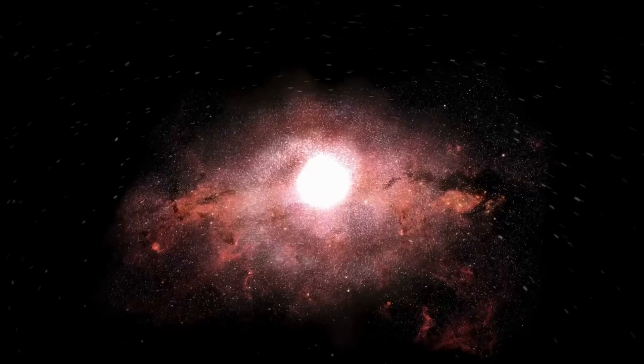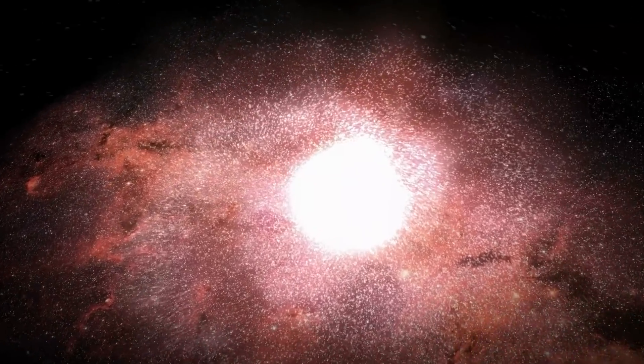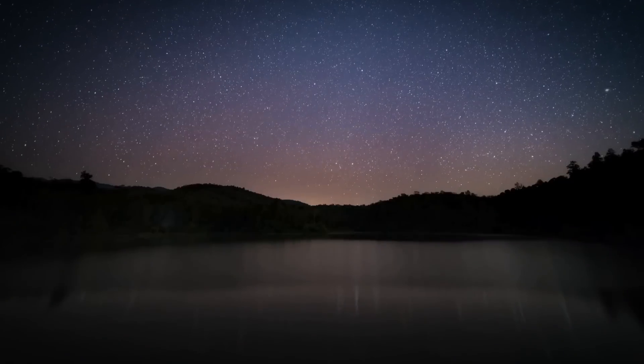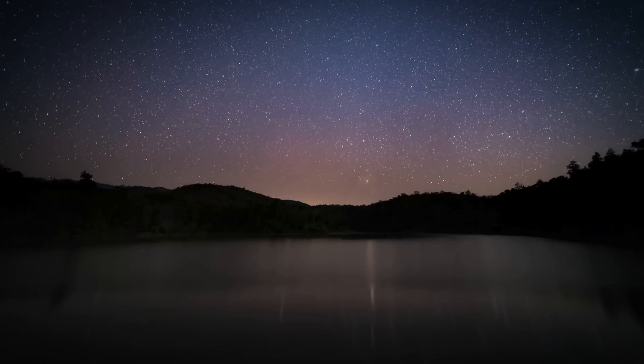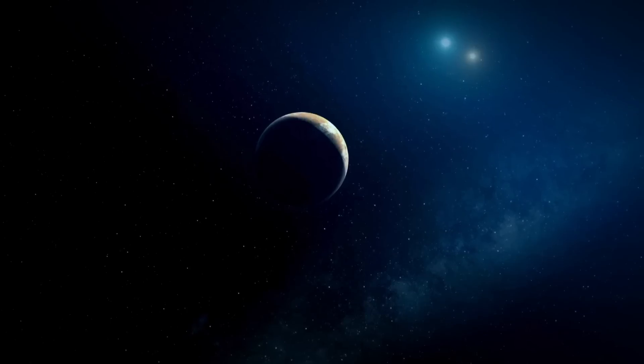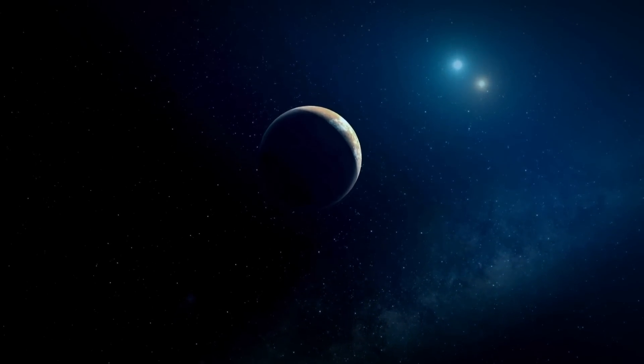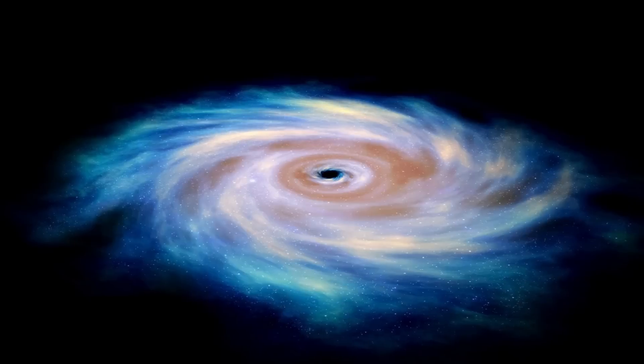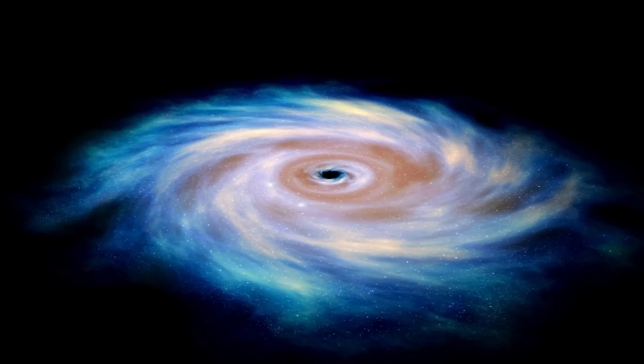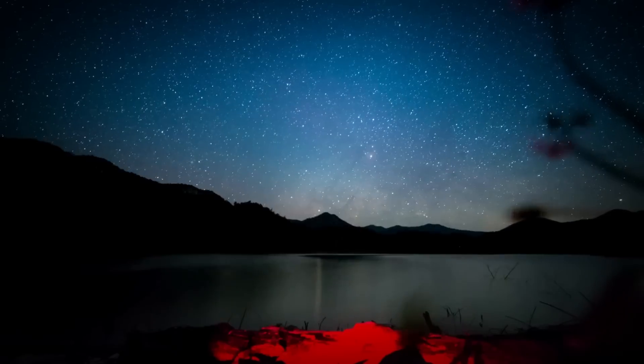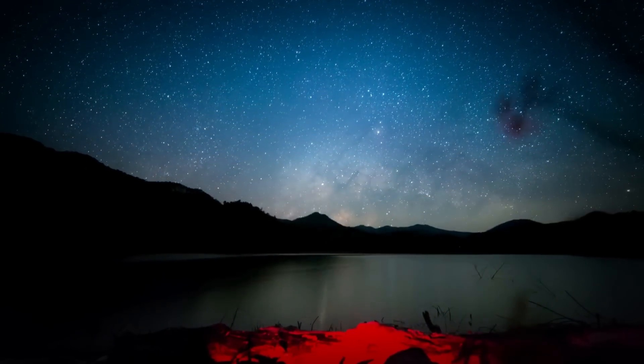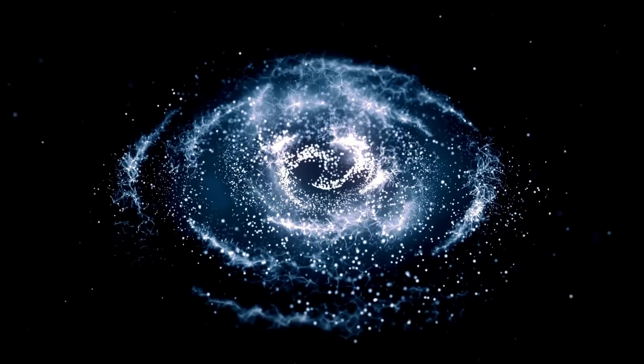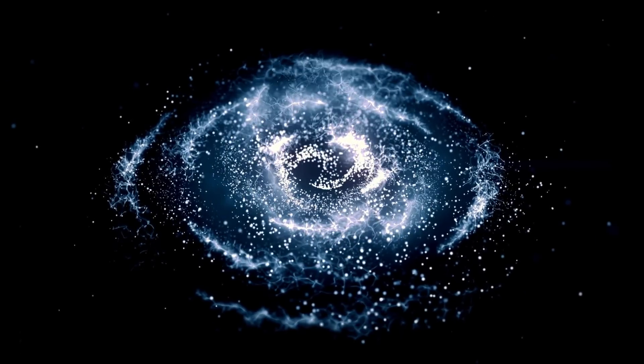Supernovae are cataclysmic events that occur when massive stars reach the end of their life cycles and undergo rapid collapse and explosion. A supernova explosion releases an enormous amount of energy, outshining an entire galaxy for a brief period and producing heavy elements that enrich the interstellar medium. Theoretical models suggest that Betelgeuse, as a red supergiant, could eventually explode in a type 2 supernova, which would be visible from Earth even during daylight hours.